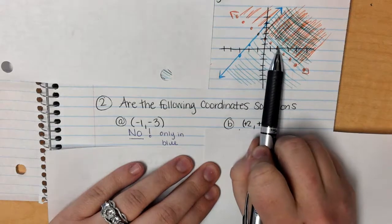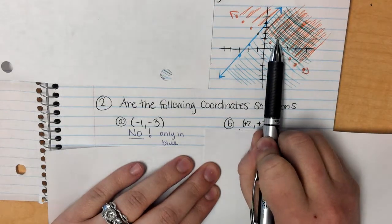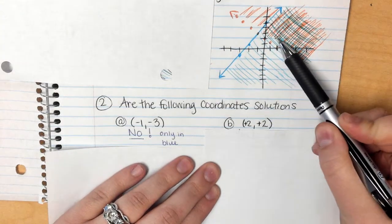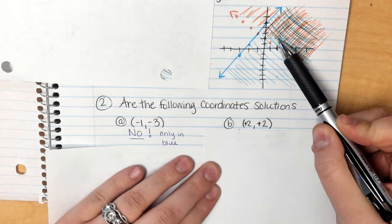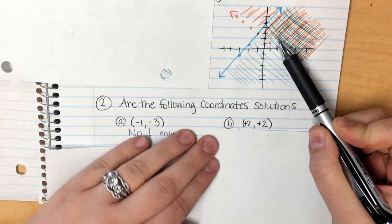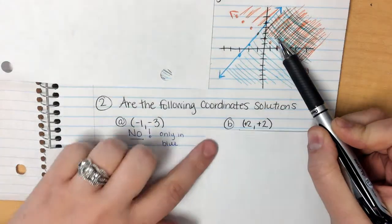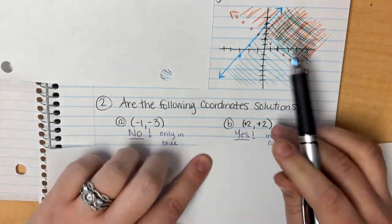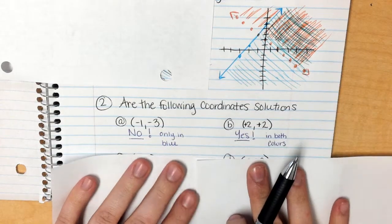What about positive 2, positive 2? So I'm going to go over 2, I'm going to go up 2, and that's right here. So I ask myself, is he a solution in the blue? Yes, because he's down in the shaded area of the blue. Is he a solution of the red? Yes he is because he's shaded up right there. So he is a solution in both. Because he's in both colors, he is a solution.